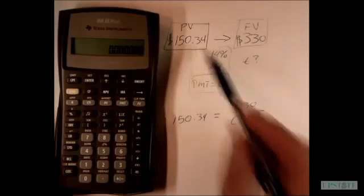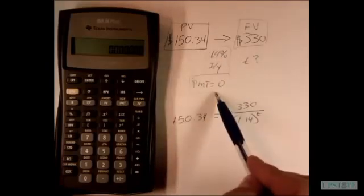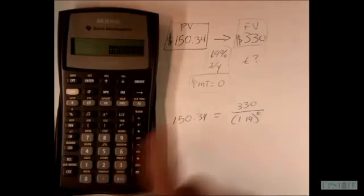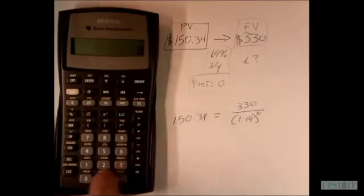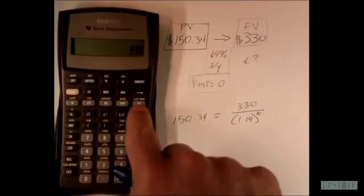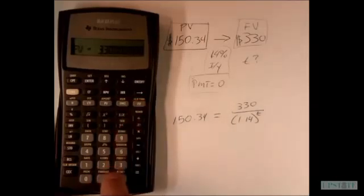We know that payment is zero because we don't have recurring payments. We're going to start plugging this stuff in. We have 330 as our future value, so we hit 330 and then we're going to hit that future value button. Then we know we're going to have zero as the payment.